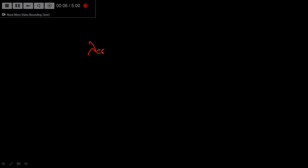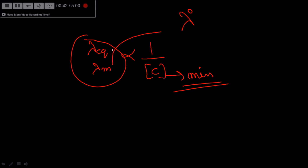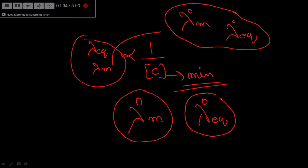Since molar and equivalent conductivity are inversely proportional to concentration, they have a maximum value when concentration is minimum, which we assume as maximum dilution. Therefore, equivalent conductivity and molar conductivity have their maximum value at infinite dilution. The molar or equivalent conductivity at infinite dilution is known as limiting molar conductivity or limiting equivalent conductivity. Lambda-naught-m (λ°m) denotes the molar conductivity at infinite dilution, and lambda-naught-eq (λ°eq) denotes the equivalent conductivity at infinite dilution.